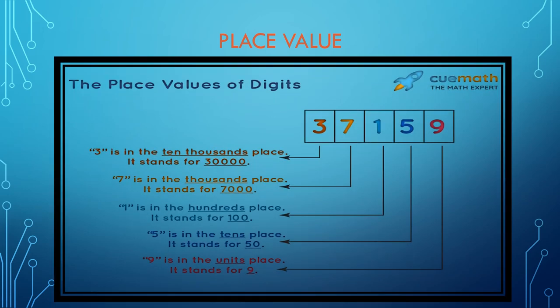Let us see the place value again, children. Here, the number is written 37159.